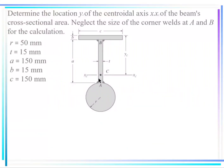At this point, the centroid is a geometrical centroid — remember that. We need to find this location from this axis. Neglect the size of the corner wells — neglect those small wells here, those two.